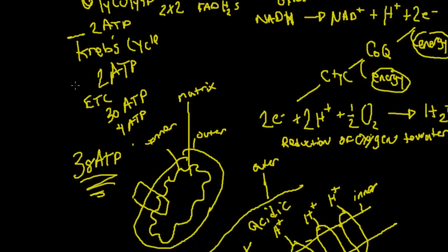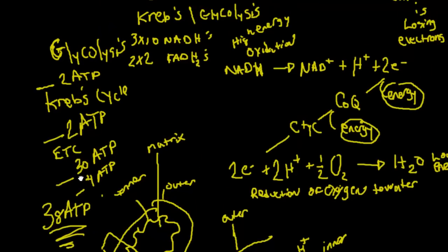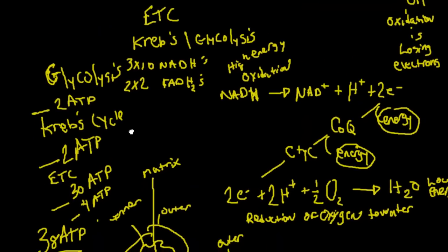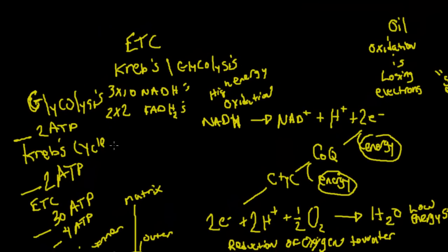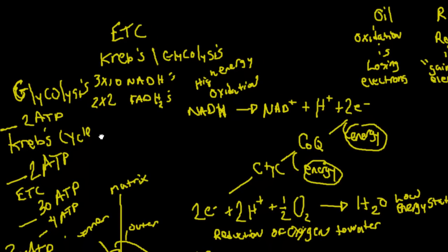So 2 from glycolysis, 2 from the Krebs cycle, 30 from the NADHs, and 4 from the FADHs. So this is how the electron transport chain works. I hope you've enjoyed this video. And I will see you in the next one.